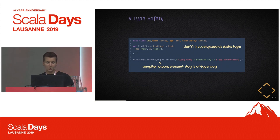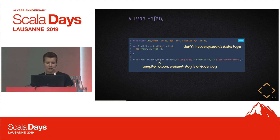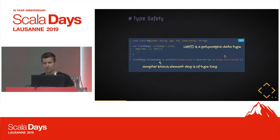This is especially useful when we work on data types like containers. In this case we have a list of dogs, and when we run a method on this container — in this case forEach — the compiler is able to help us and knows that each type in this container is a dog. So we are able, in this forEach method, to call methods or reference fields defined on that data type.